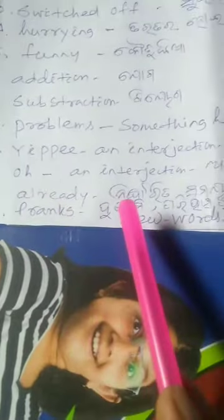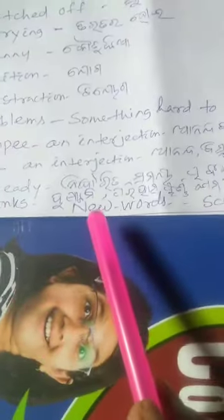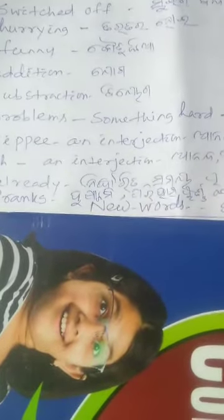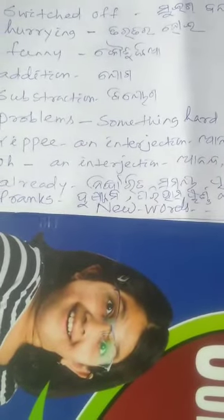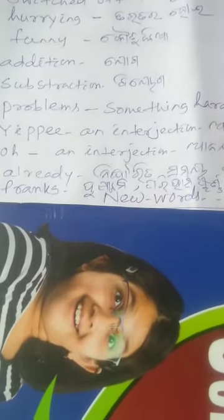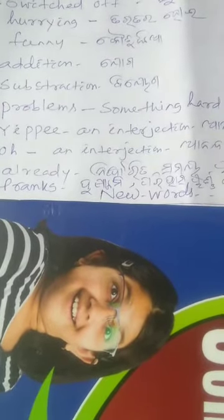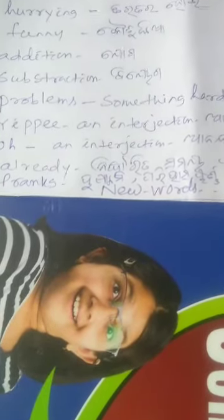Number 11: Already — निर्धारित समय पुर्भरू. Number 12: Pranks — दुस्त्यमी, परियाशपुन्य काम. So dear students, you have to practice these new words 4 to 5 times. Thanks.